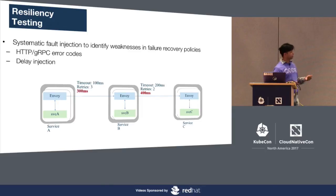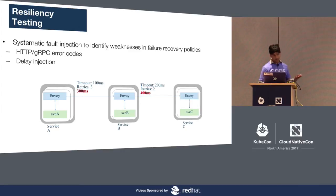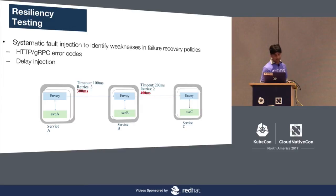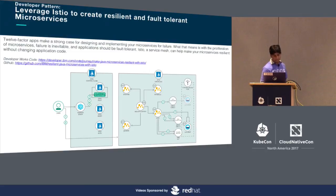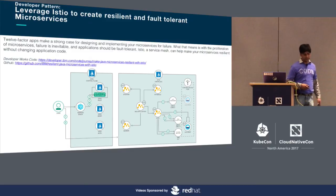By default, Istio gives you a lot of HTTP and gRPC error codes and allows you to inject faults. In fact, the Istio Analytics tool we showed from IBM Research is using Istio's fault injection capability to show what's happening in the visualization. We also created a developer pattern that goes into the details of how you can actually do all of this.